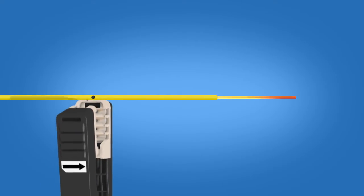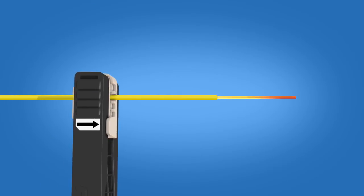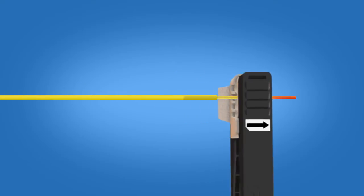Use the cord splitter to split the jacket 90 millimeters from the end of the fiber, 55 millimeters from the end of the three millimeter jacket.